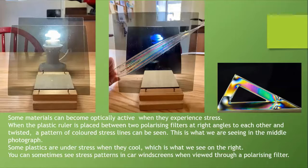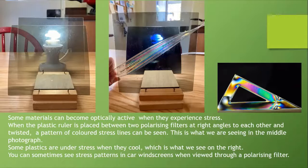On the left, we see a lamp and in front of it are two polarizing filters. On the left they're in parallel, but in the middle, they're crossed polarizing filters. Some materials become optically active when they experience stress. When the plastic ruler is placed between the two polarizing filters at right angles to each other and then twisted, stress, a pattern of colored stress lines can be seen. This is what we're seeing in the middle photograph. Some plastics are under stress when they cool after being manufactured, which is what we're seeing on the right. You can sometimes see stress patterns in car windscreens when viewed through a polarizing filter, sometimes even without one. It depends on conditions.